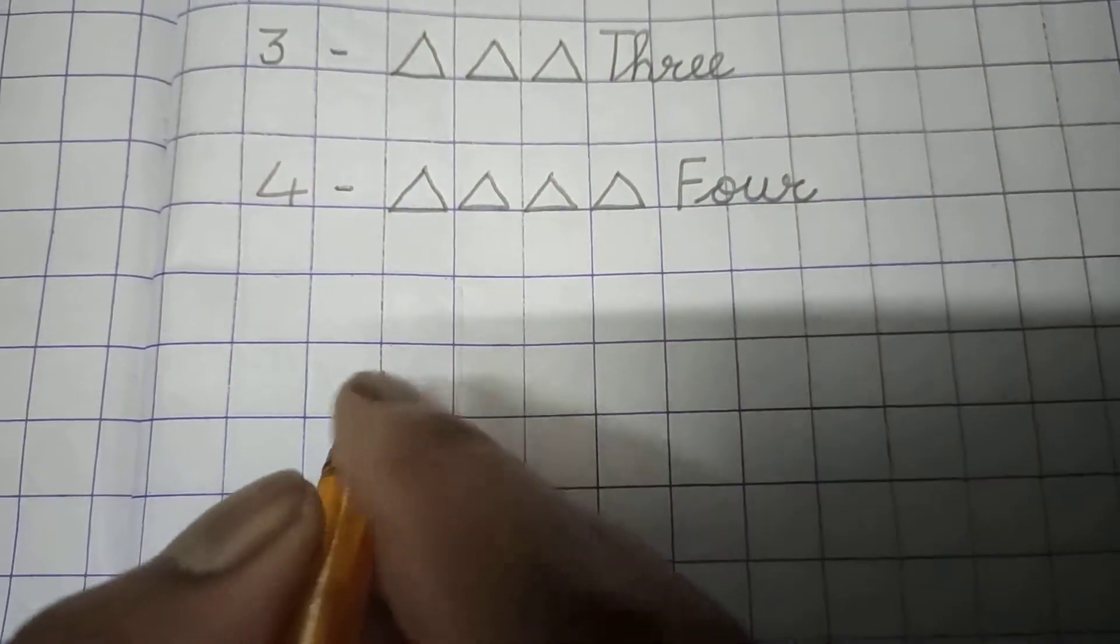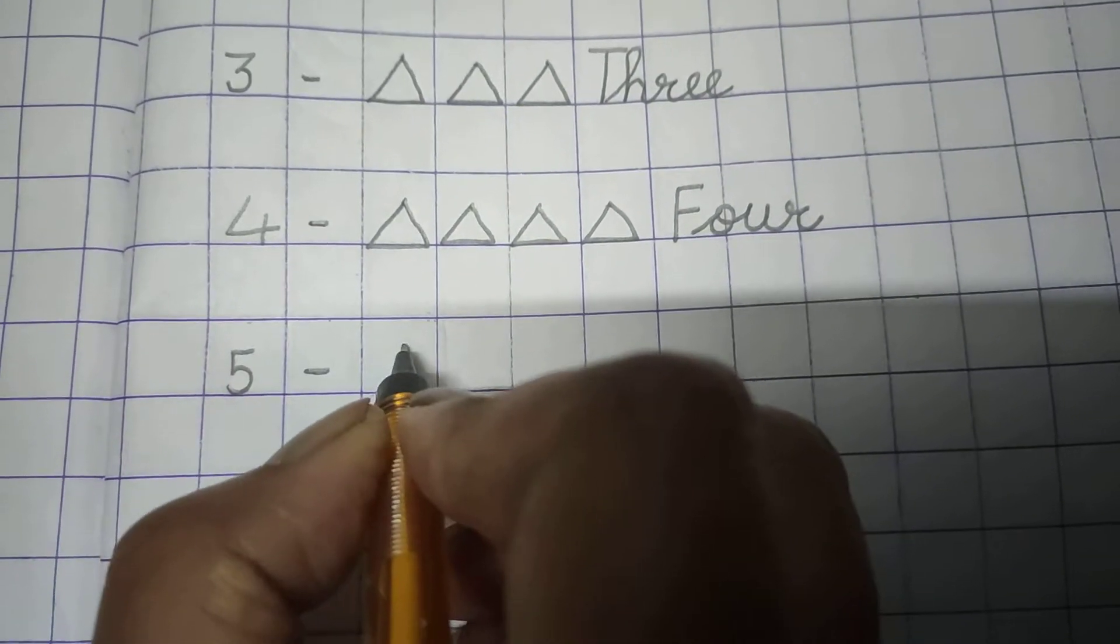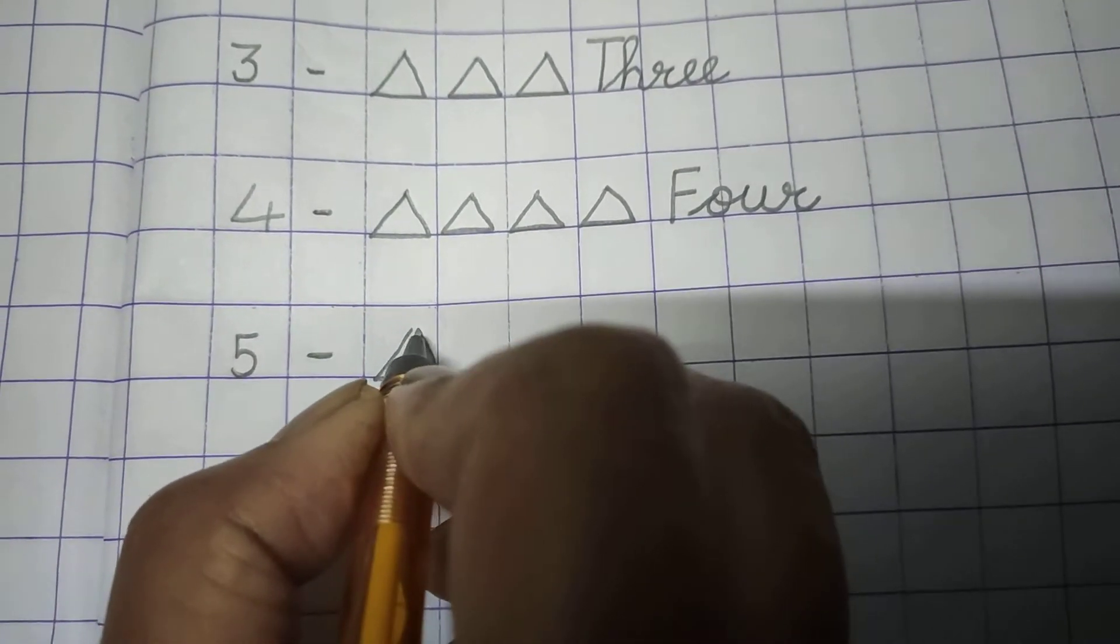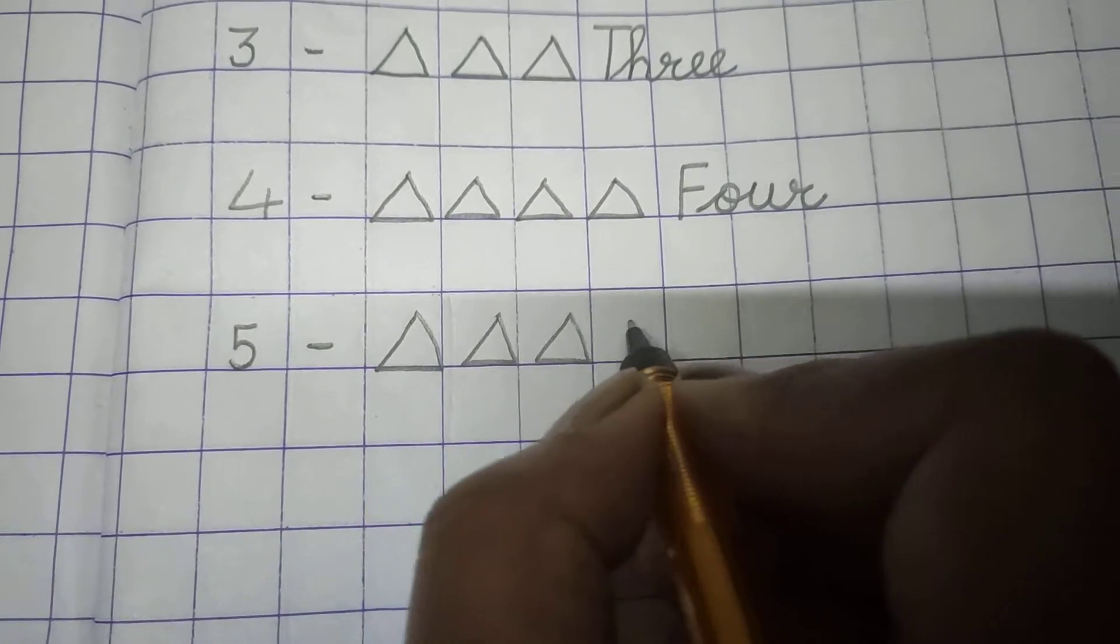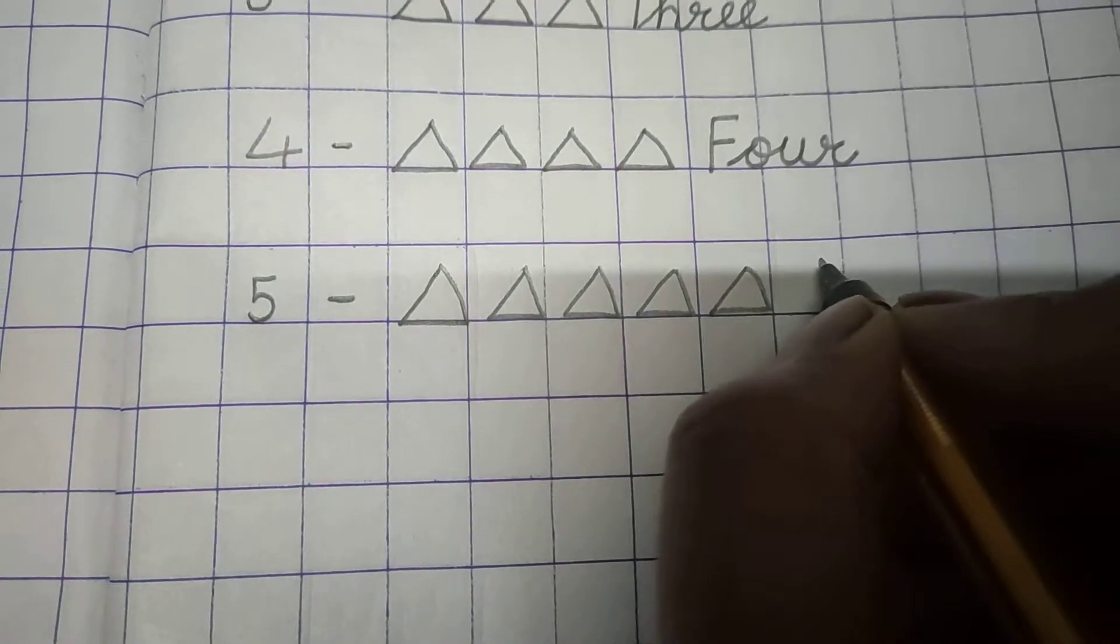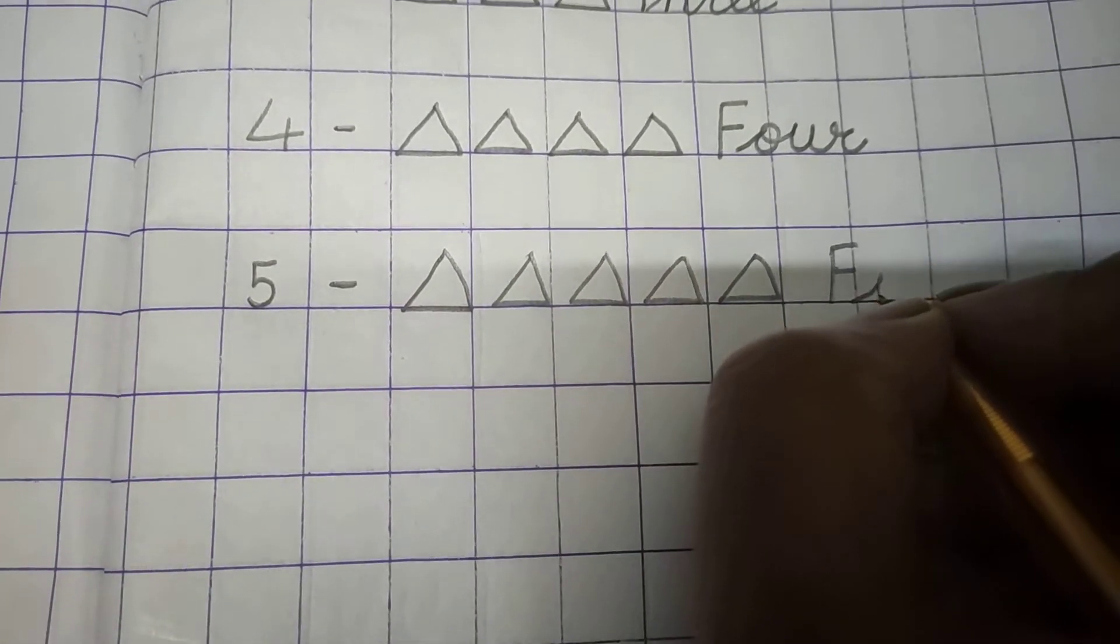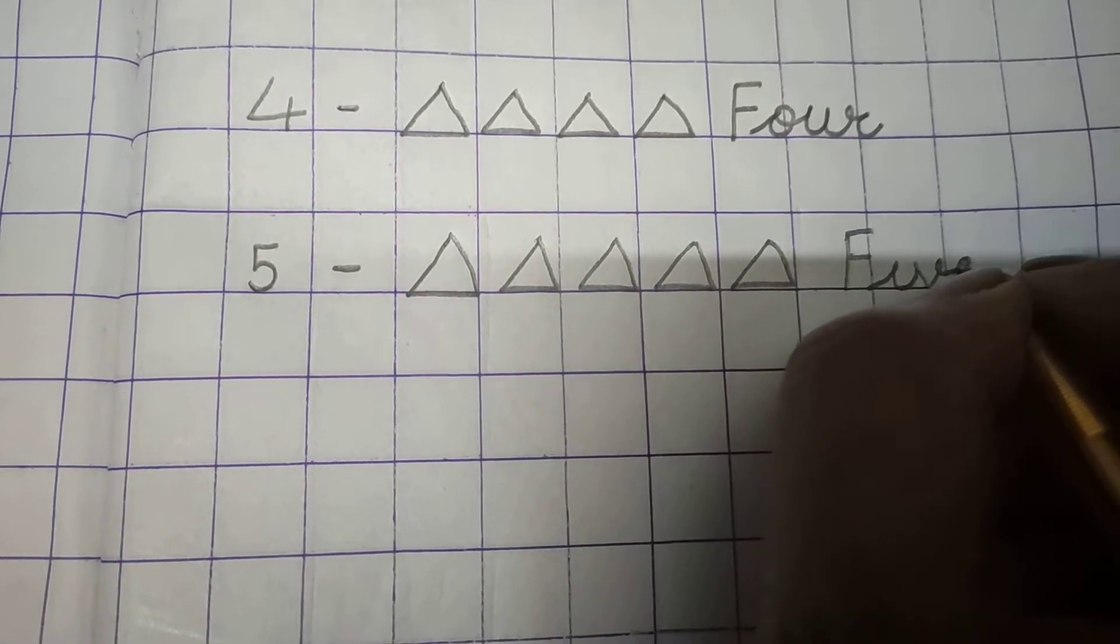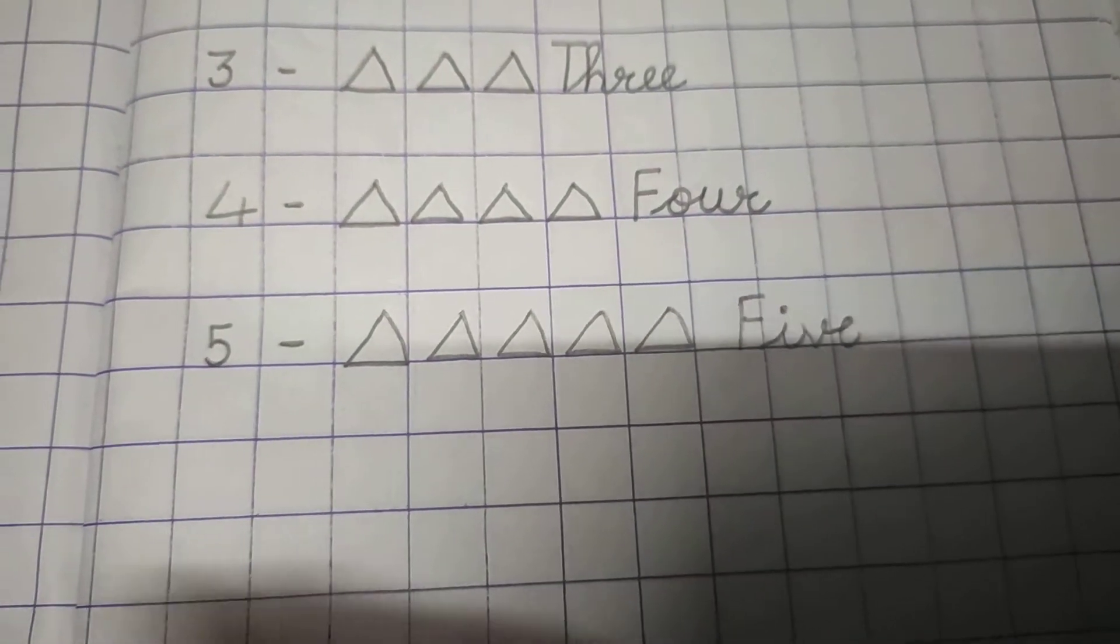Now 5. Draw 5 triangles. Count: 1, 2, 3, 4, 5. Now write down 5: F-I-V-E, 5. Like this.